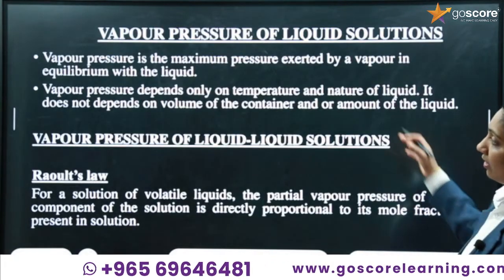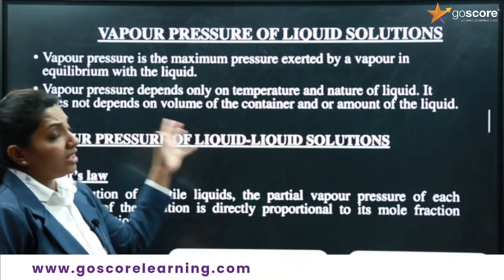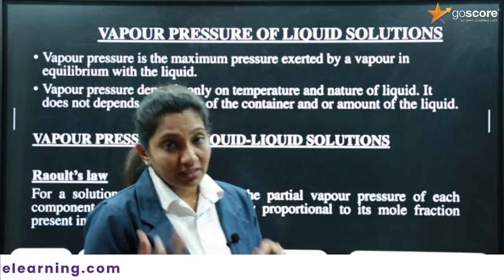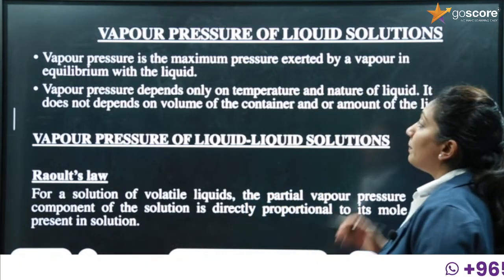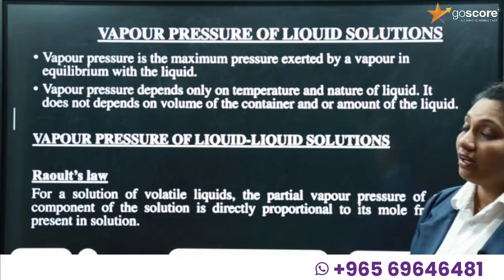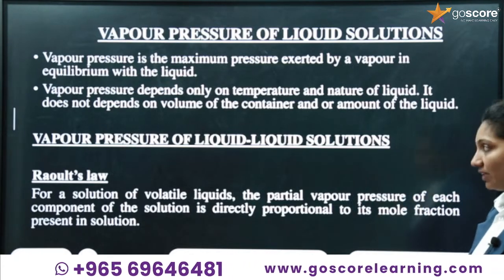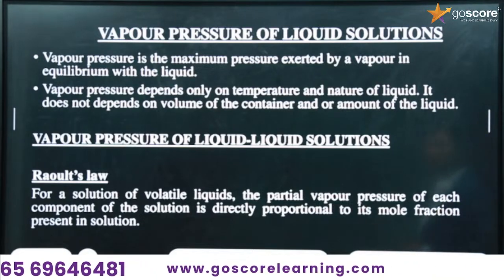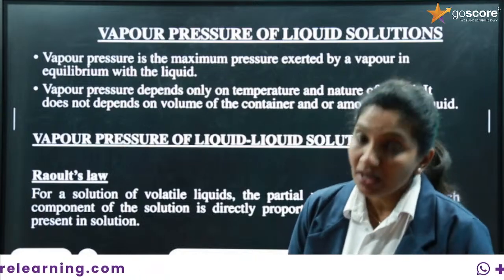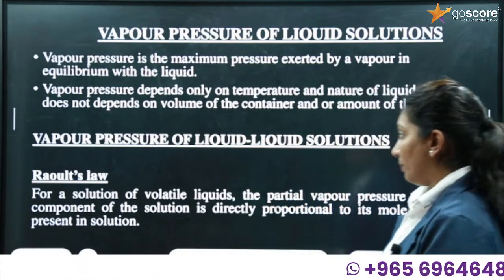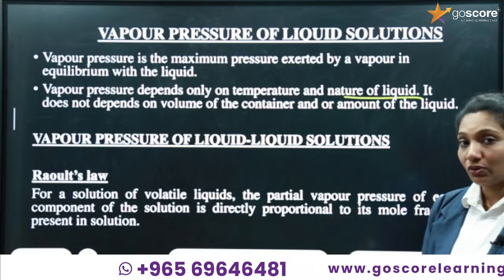Now, the solubility of liquids in liquids. First, you should know what is vapor pressure. Whenever a liquid produces vapors, the pressure exerted by those vapors is called vapor pressure. Vapor pressure is the maximum pressure exerted by a vapor in equilibrium with a liquid. Vapor pressure depends only on temperature and the nature of the liquid — it does not depend on the volume of the container or the amount of solvent.